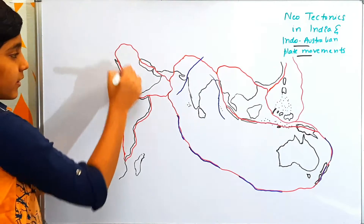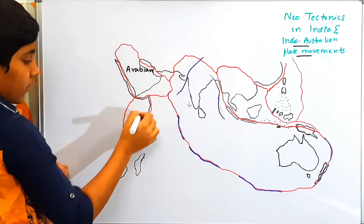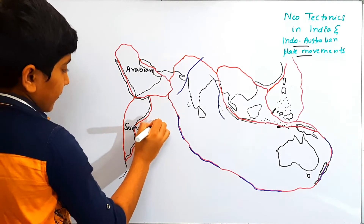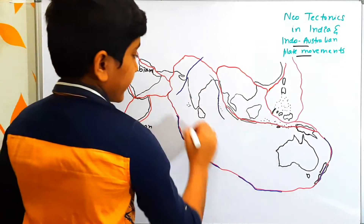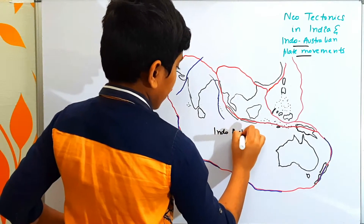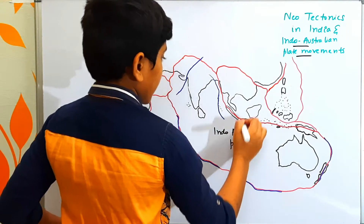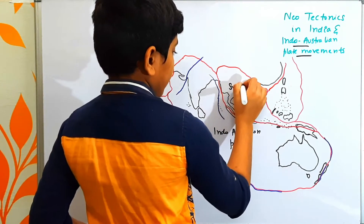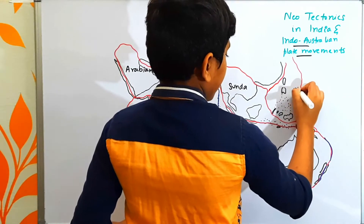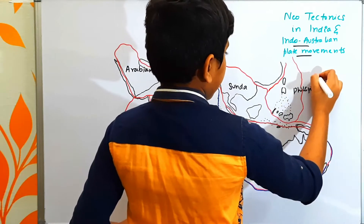Let us start from here. This plate is the Arabian plate. This plate is called the Somalian plate. This whole plate is called the Indo-Australian plate. This plate here is called the Sunda plate. And this is called the Philippines plate.